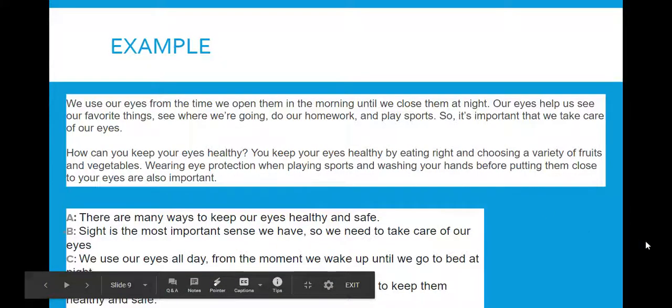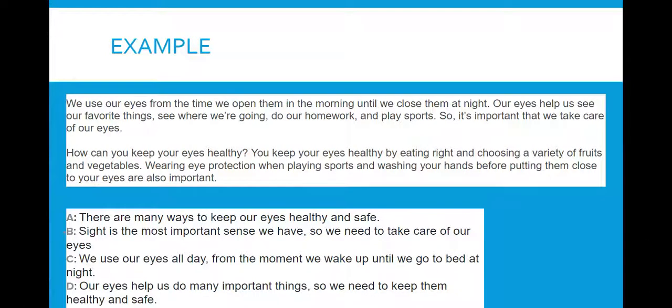Okay, let's look at an example. Read this story with me. We use our eyes from the time we open them in the morning until we close them at night. Our eyes help us see our favorite things, see where we're going, do our homework, and play sports. So it's important that we take care of our eyes. How can you keep your eyes healthy? You keep your eyes healthy by eating right and choosing a variety of fruits and vegetables. Wearing eye protection when playing sports and washing your hands before putting them close to your eyes are also important.